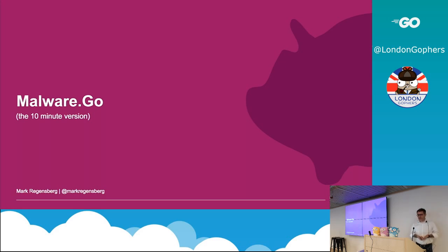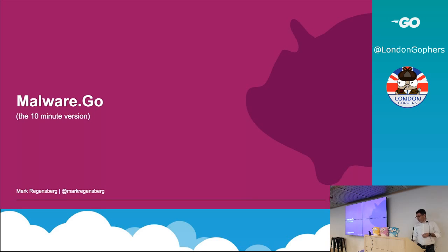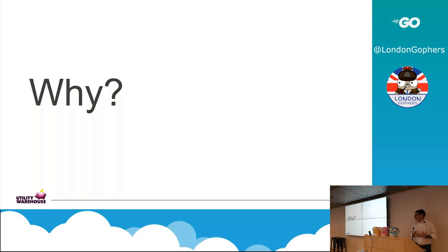I'm not actually sure what the term for a Utility Warehouse employee is — I'll figure it out. This is an interesting one; I think we're actually at an almost record attendance for this. So I'm going to go for a second record: we're going to do a malware talk, more or less about Go, that only has one line of code in it, and it's in Java. So why are we talking about it? And this is a lightning talk.